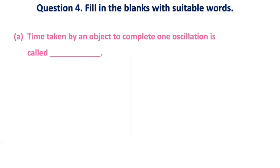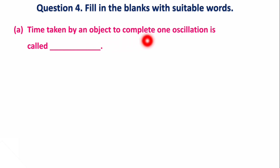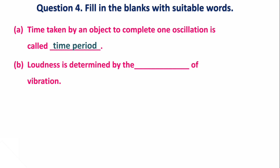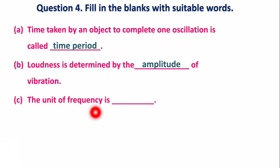Question 4: Fill in the blanks. Time taken by an object to complete one oscillation is called time period. Loudness is determined by the amplitude of vibration. The unit of frequency is hertz, which can also be represented as Hz.